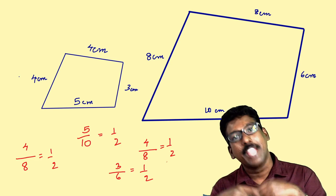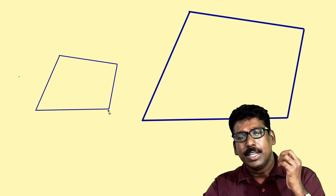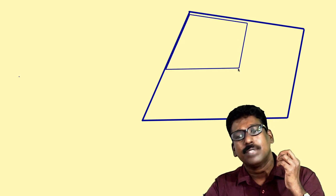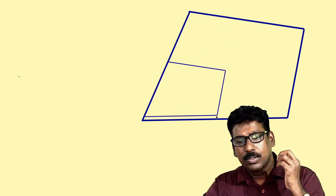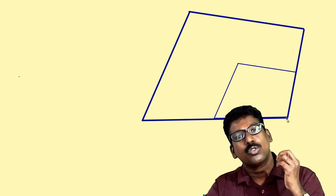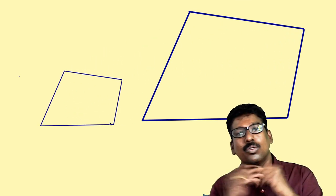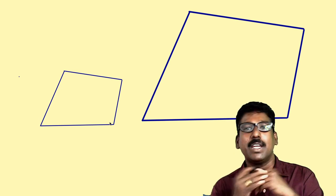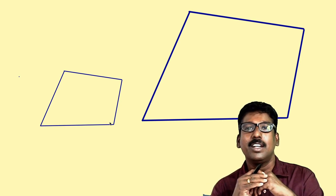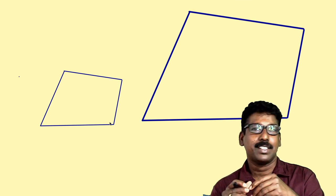Now what about the angles? If I take this quadrilateral and place it on the other, these two angles are equal, here also these angles are equal, and this angle is also equal. That means for two similar quadrilaterals, their angles are equal and their sides are proportional. This is true for any similar polygons.